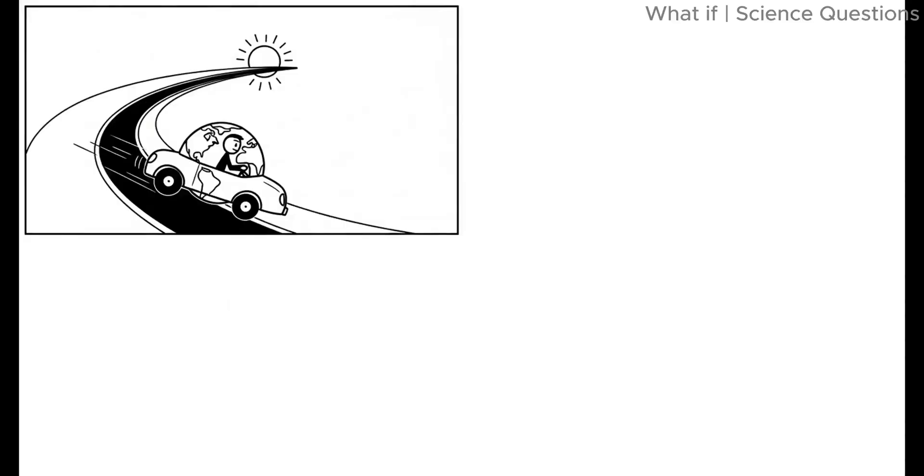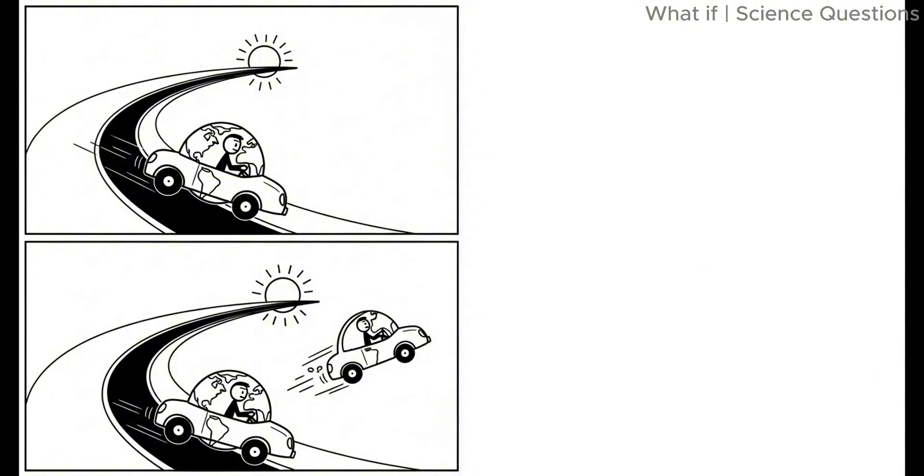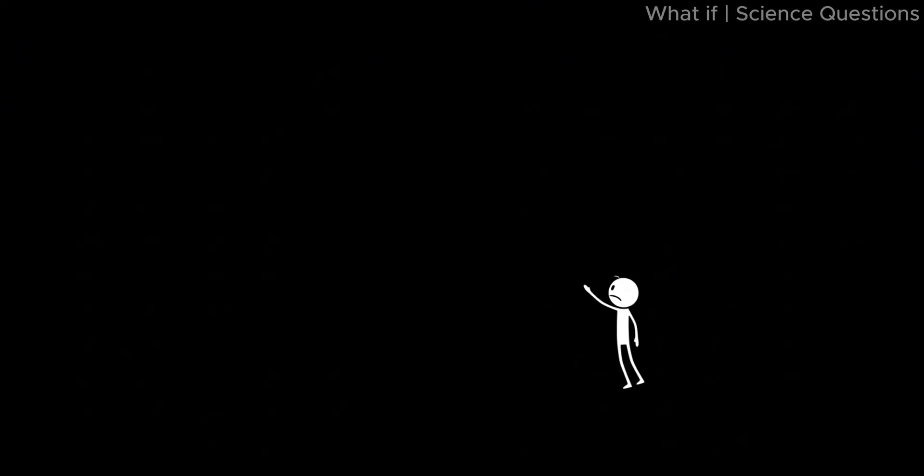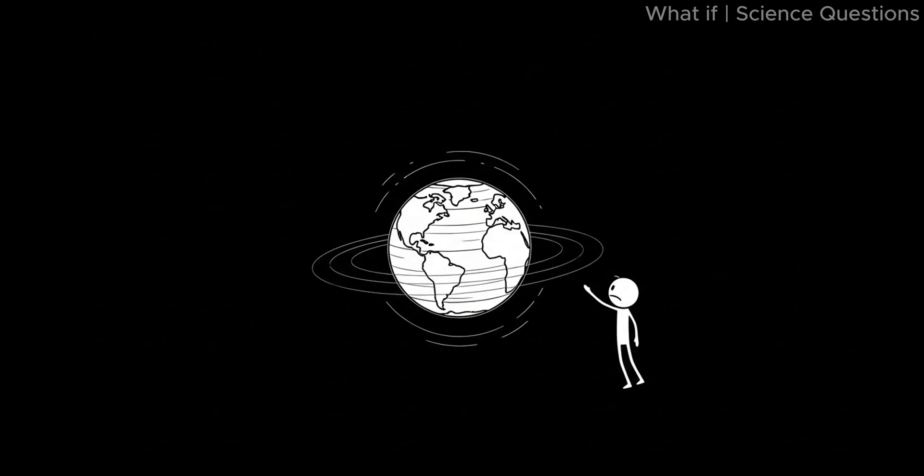Imagine earth as a car that was speeding around a racetrack. If the center of the track disappears, the car flies straight off the curve. That's us. Earth becomes a rogue planet, drifting aimlessly into the void.